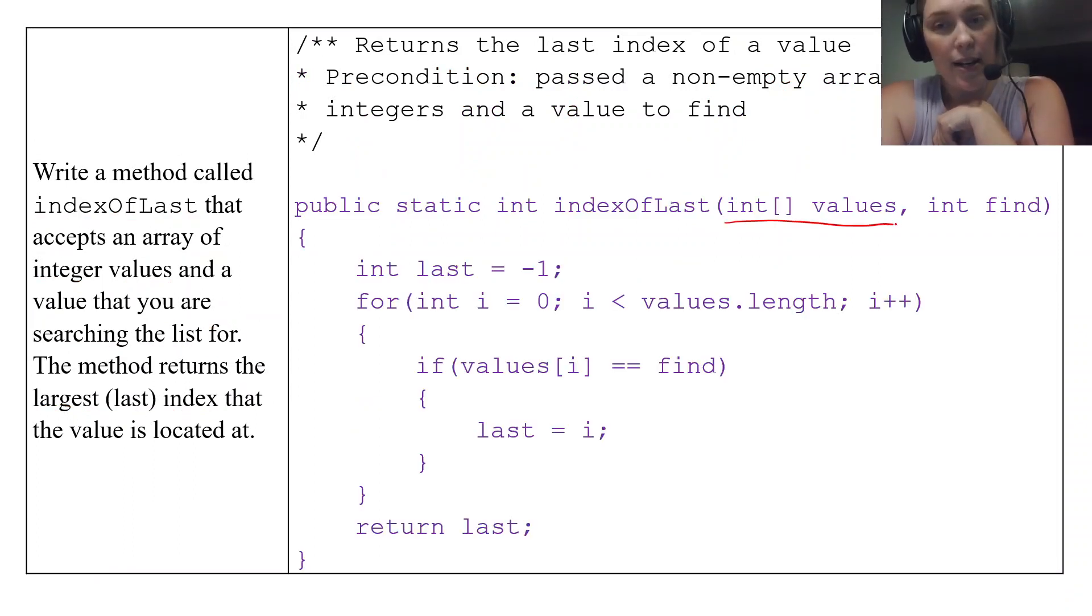So you'll see here, passed an array of integer values, what you want it to find. I called it last. Still traversing through the array. We're checking to see if the element is equal to what we want to find. And if it is, I just want to keep track of that index. I don't already know what the value I'm trying to find is. I want to keep track of the index. Okay. Look good? Okay.